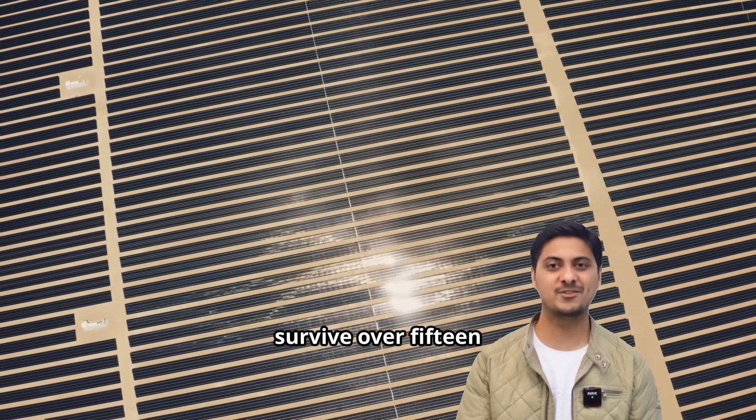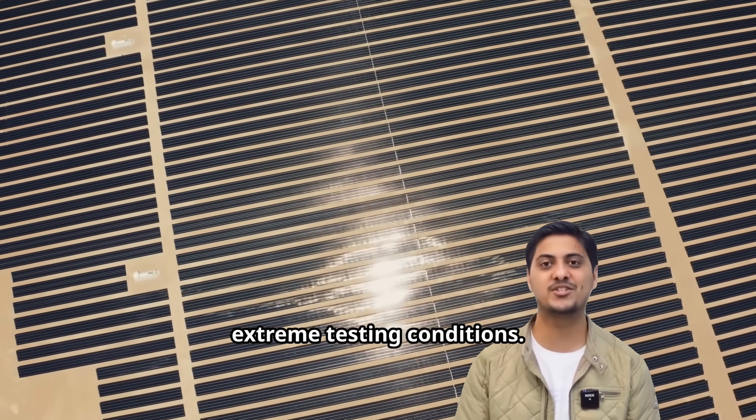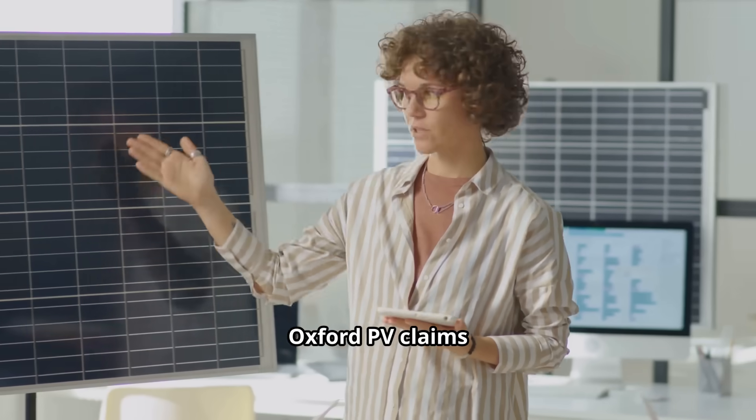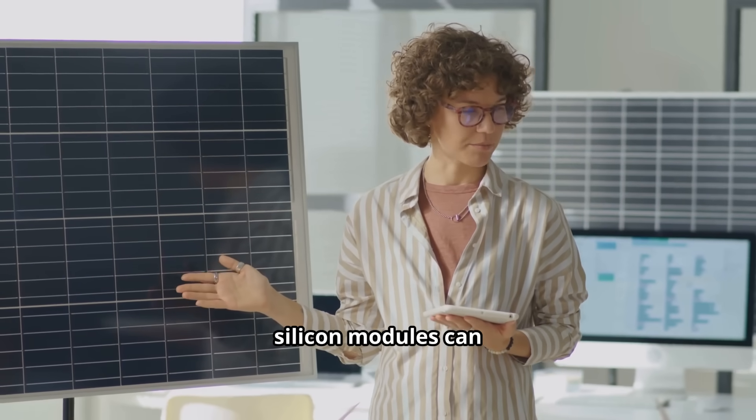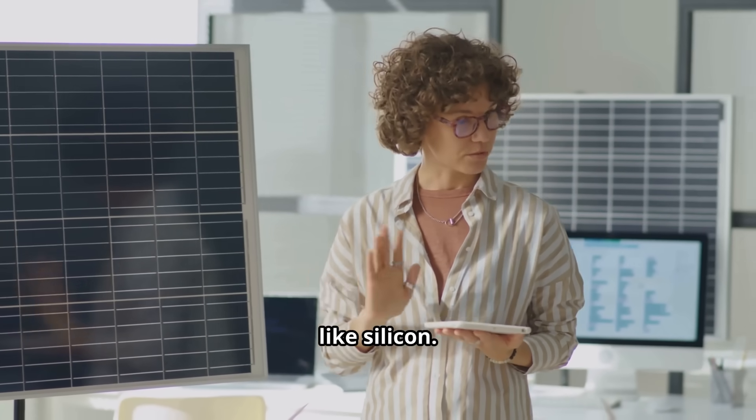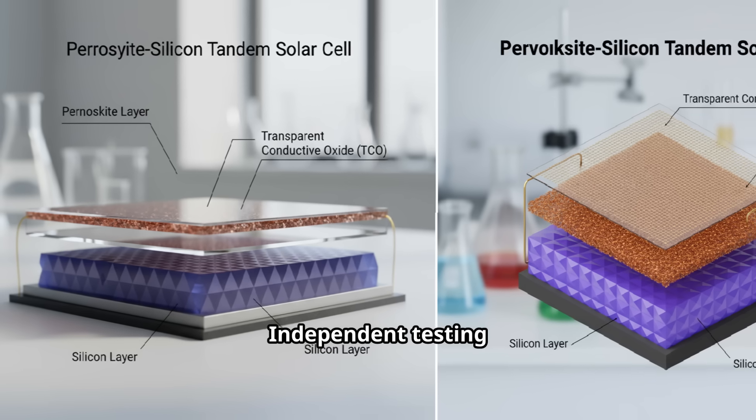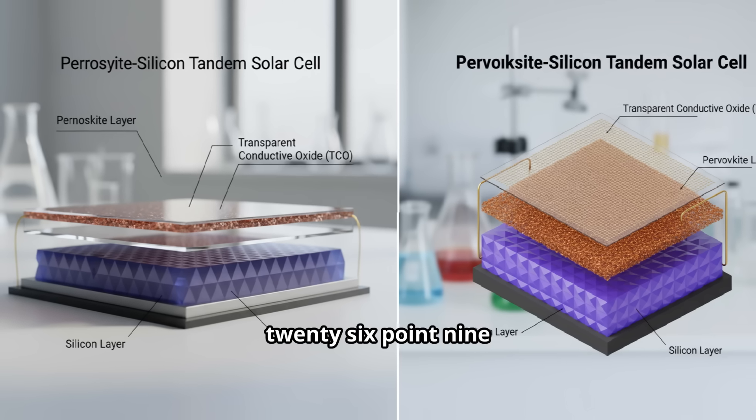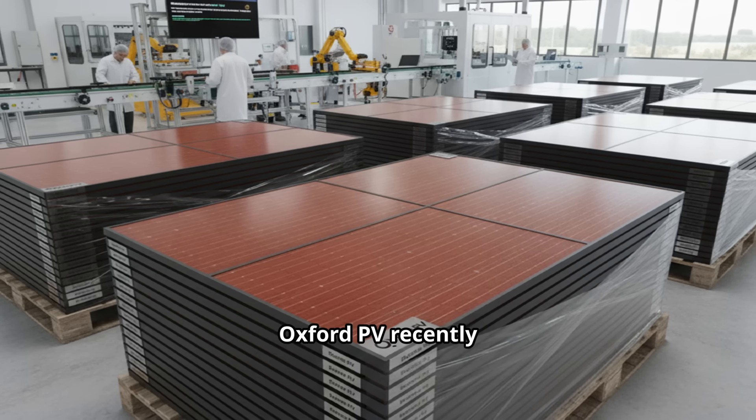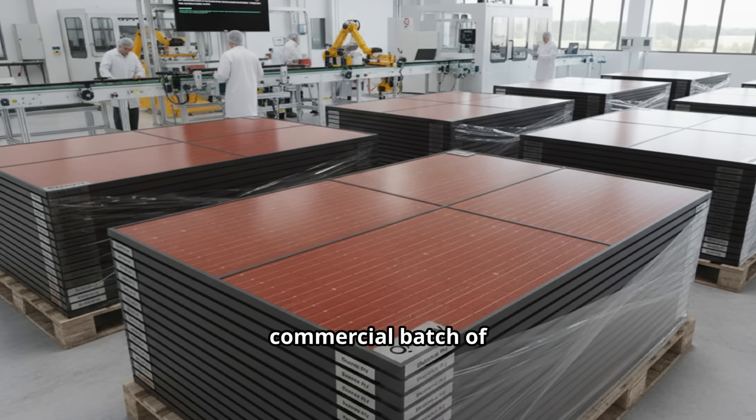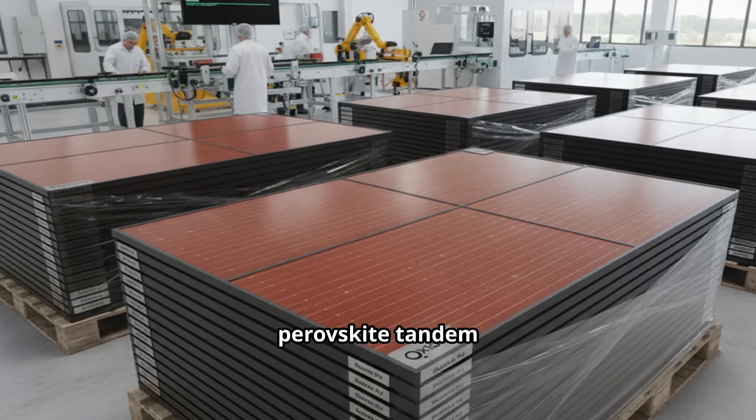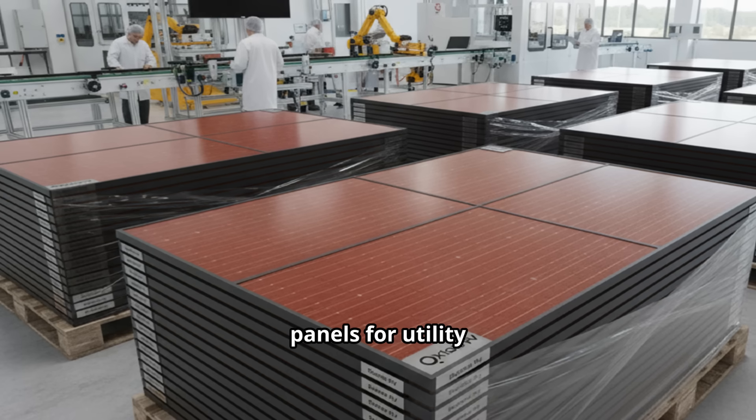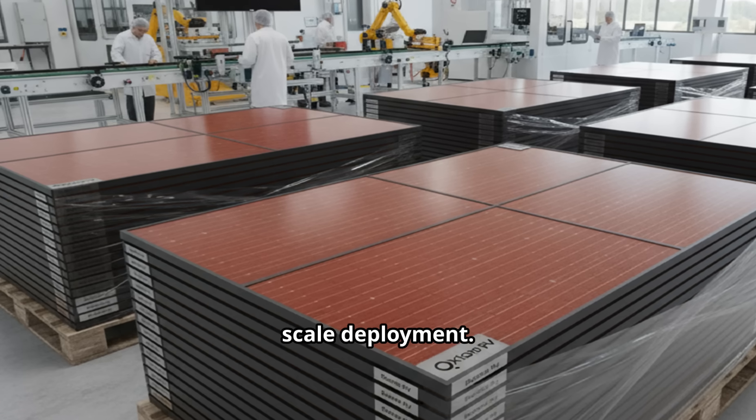Modified cells now survive over 1500 hours of extreme testing conditions. Oxford PV claims their perovskite silicon modules can last 25 years like silicon. Independent testing by Fraunhofer ISE has certified residential-size perovskite modules reaching 26.9% efficiency. Oxford PV recently shipped their first commercial batch of perovskite tandem panels for utility-scale deployment.